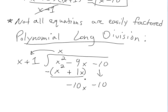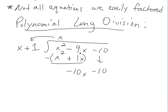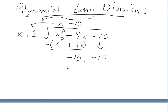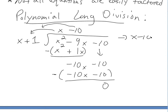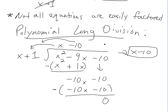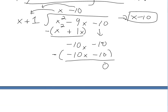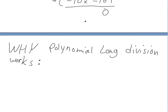Bring down the negative 10. Now divide again: how many times does x go into negative 10x? We need to multiply by negative 10. So negative 10 times both terms gives negative 10x minus 10. Then we subtract — both terms cancel perfectly to zero. Our answer is x minus 10. And that's what we could also get by factoring, but this illustrates how long division works.